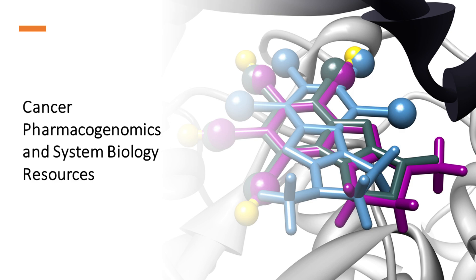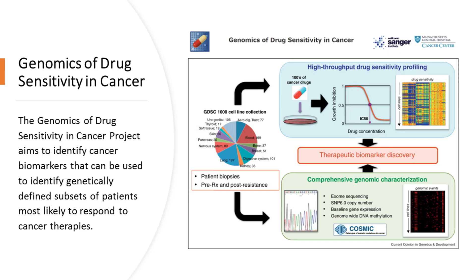The Cancer Dependency Map project is committed to open science; all data generated by the project is available to the public under a Creative Commons license. The datasets are released pre-publication on a quarterly basis and are accessible on the DepMap portal. The Genomics of Drug Sensitivity in Cancer project, or GDSC, is part of a Wellcome-funded collaboration between the Cancer Genome Project at the Wellcome Sanger Institute in the UK and the Center for Molecular Therapeutics at the Massachusetts General Hospital Cancer Center in the US. This collaboration integrates the expertise at both sites toward the goal of identifying cancer biomarkers that can be used to identify genetically defined subsets of patients most likely to respond to cancer therapies.